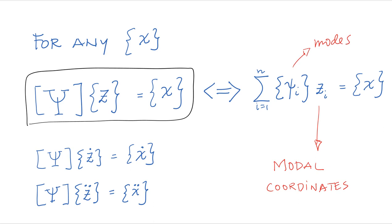If we take this equation and take one derivative, because the phi's don't depend on time, we obtain this equation right here, which is also valid for velocities. And if we take another derivative, we obtain this equation for accelerations. So this gives us x, x dot and x double dot as functions of the modal coordinates.